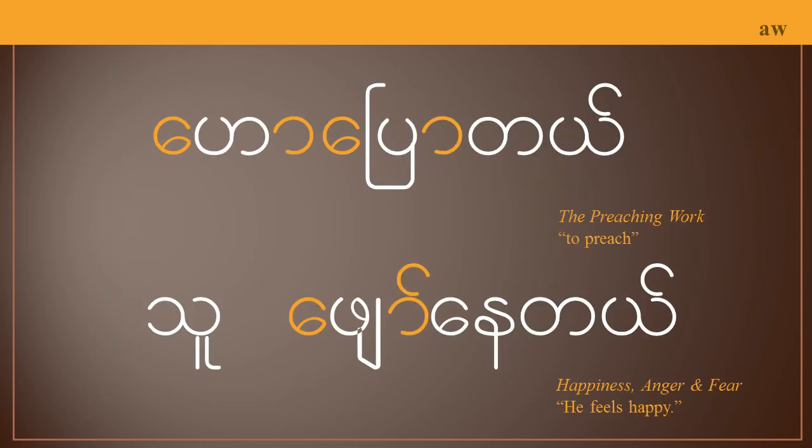So I've selected two different examples from the language app. Two different tones used, both the low tone and the high tone. Under the heading the preaching work, the word for preach actually uses this vowel twice. So you see it here, used with the consonant that's between these two symbols. And once again here, with the consonant between those two symbols.